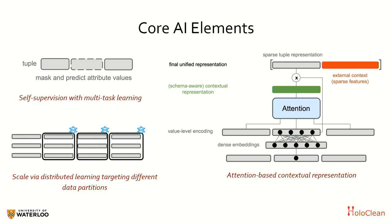To scale this, we built it on top of a bunch of modern ML concepts. The first is what we call contextual representation of the target attribute. This is an attention mechanism that allows us to focus on the most important representation of the target attribute, given the rest of the row and other signals.